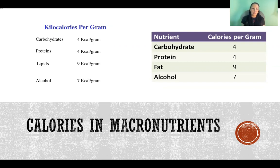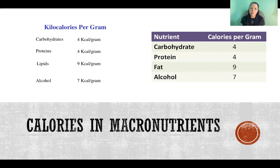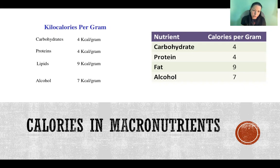Here I've included a table for both kilocalories and calories to demonstrate that we use them synonymously — they technically don't mean the same thing, but we use them as if they do. We get four calories or kilocalories per gram of carbohydrate and per gram of protein. We get nine calories or kilocalories per gram of fat, and seven calories or kilocalories per gram of alcohol. That's all for this video — thanks so much for watching.